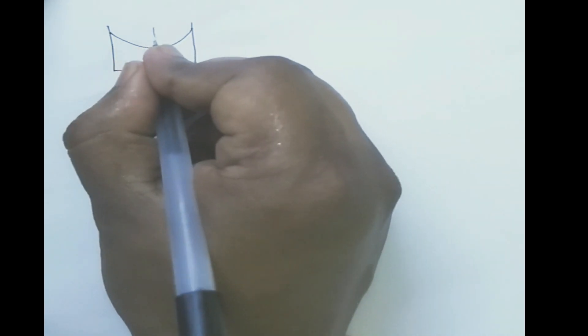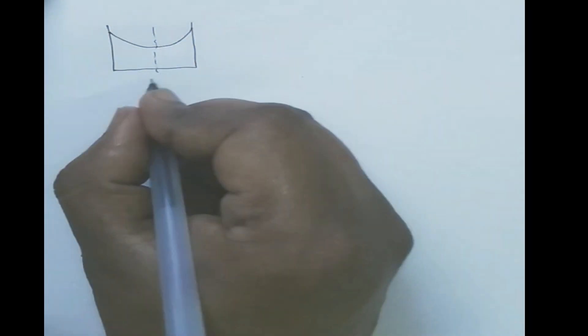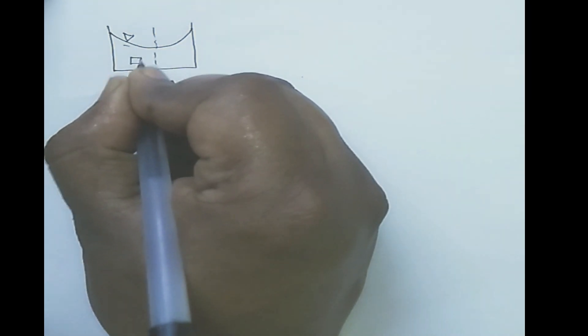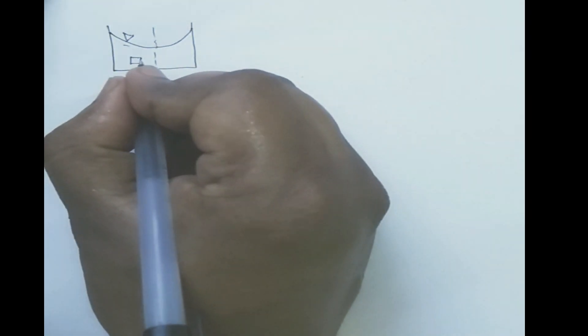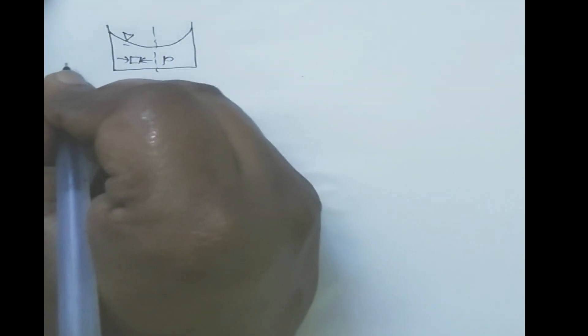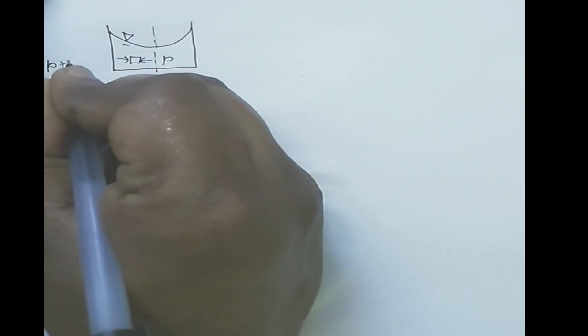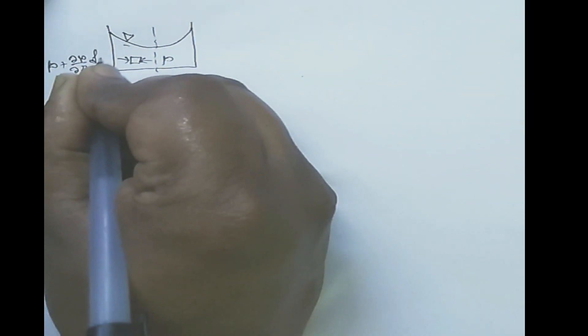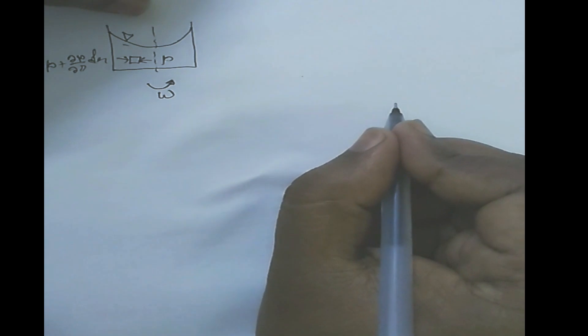When liquid is rotated at constant angular velocity omega about a vertical axis, the liquid surface forms a paraboloid. Consider a particle at radius r — the pressure at that point is p, and at r + dr it is p + dp. The centrifugal force acts outward on each liquid particle.